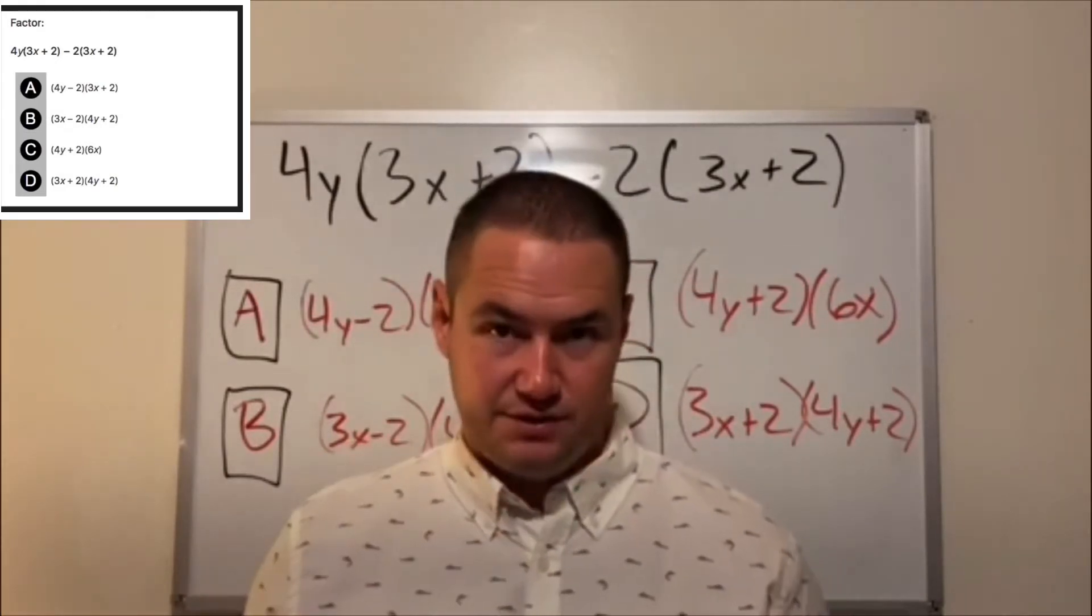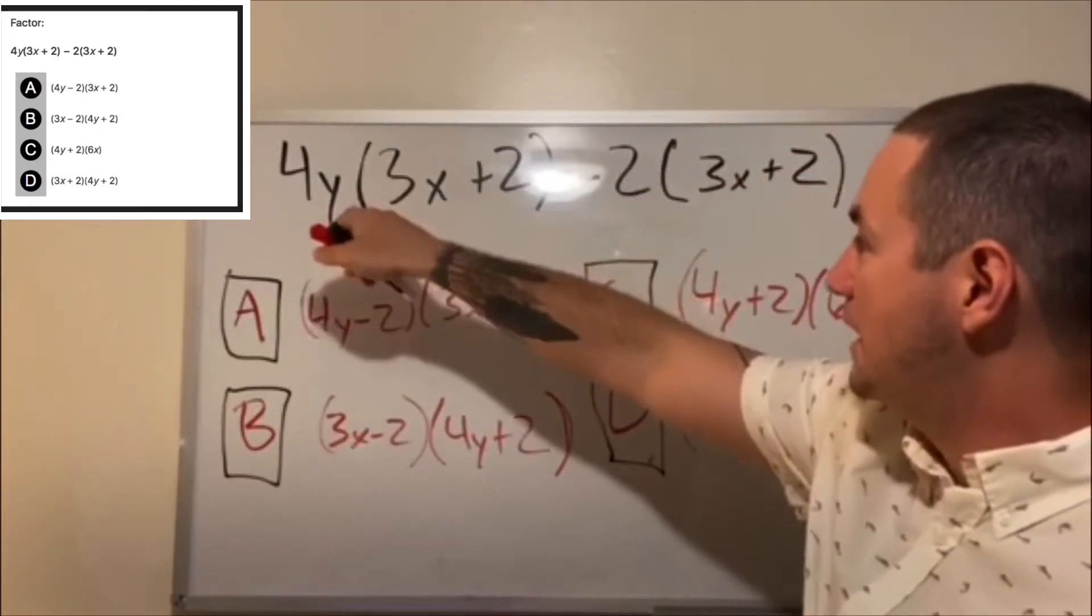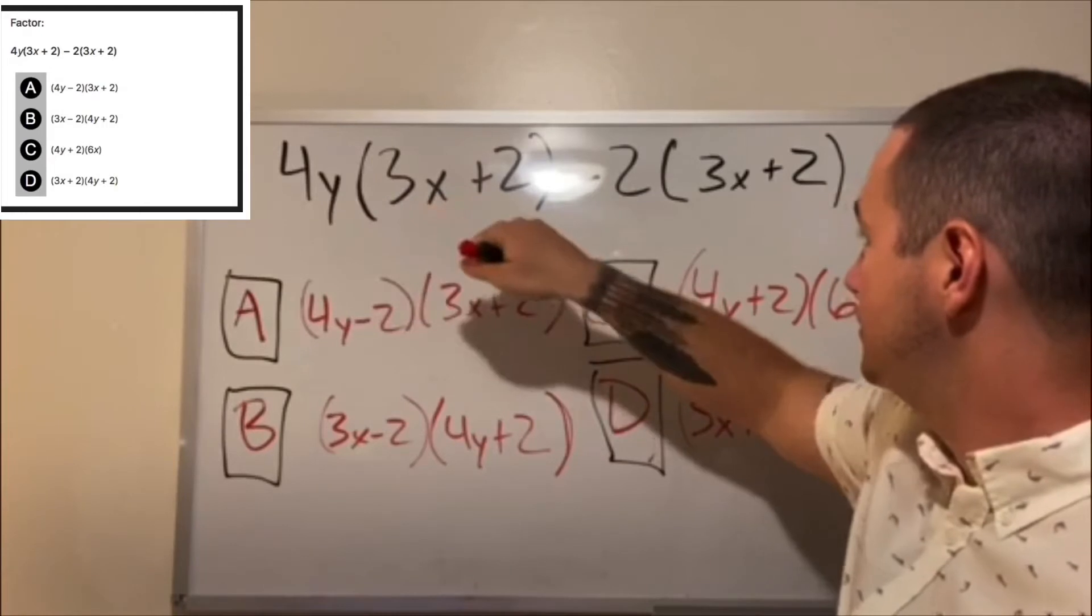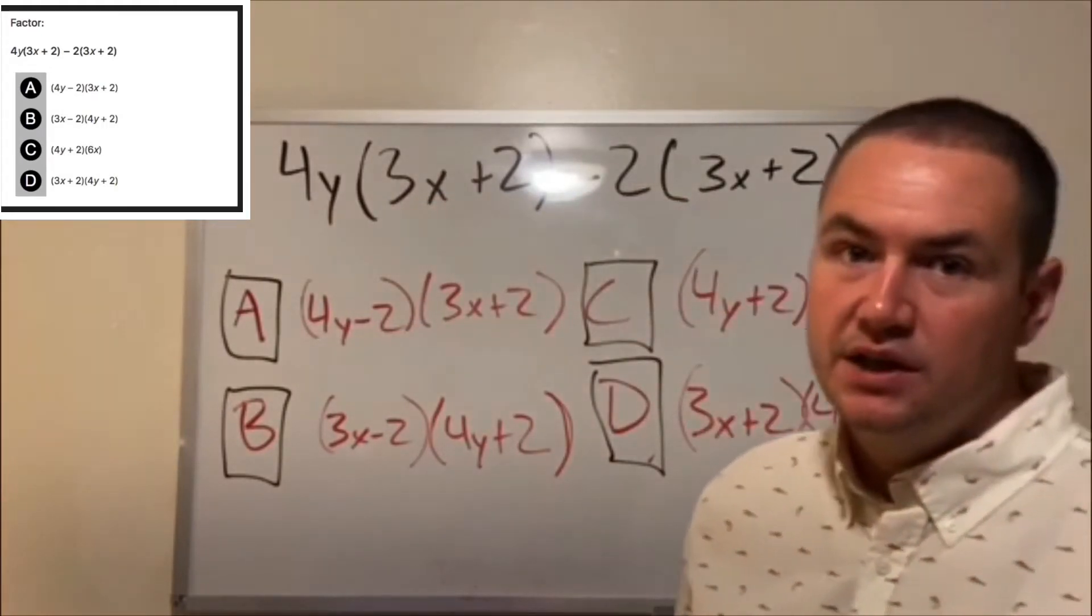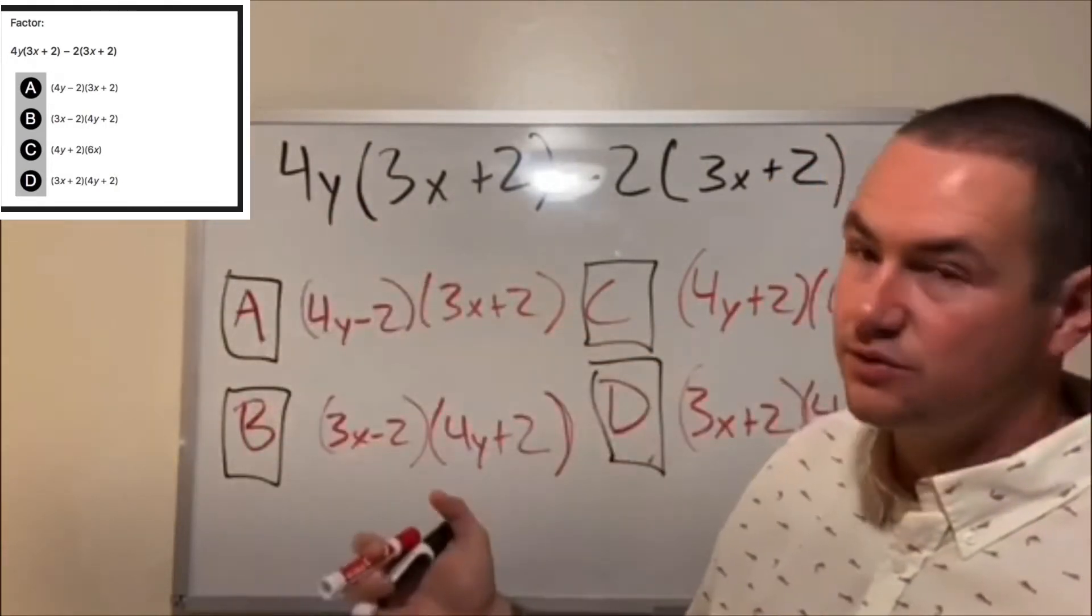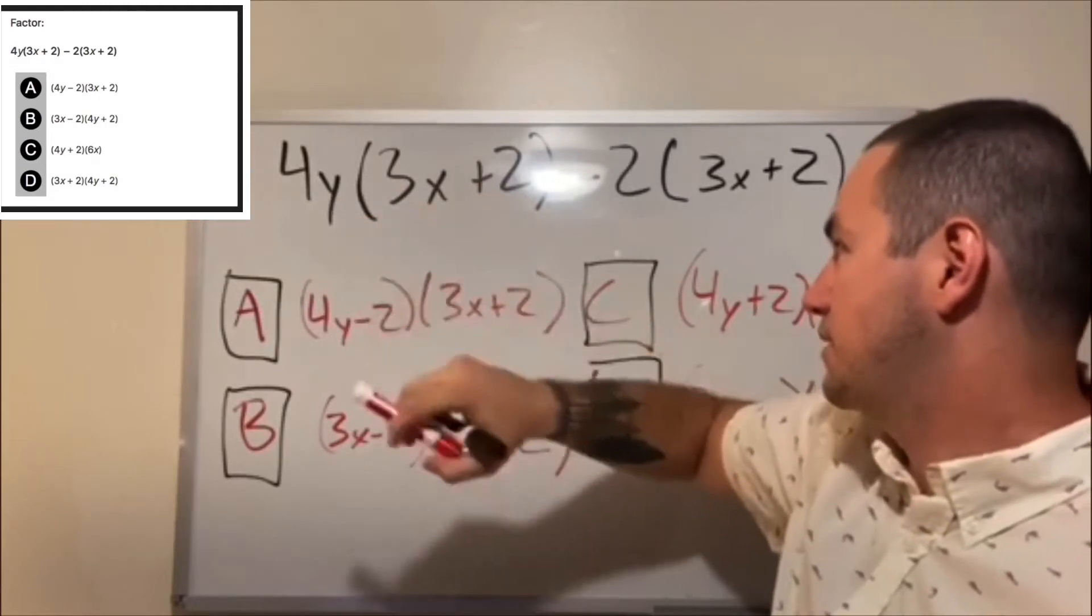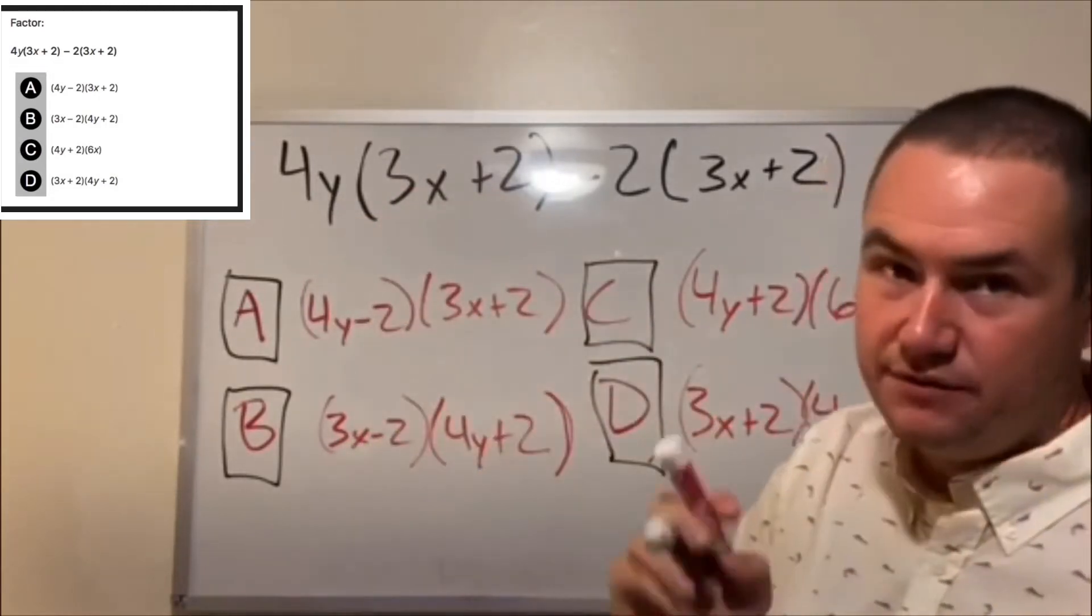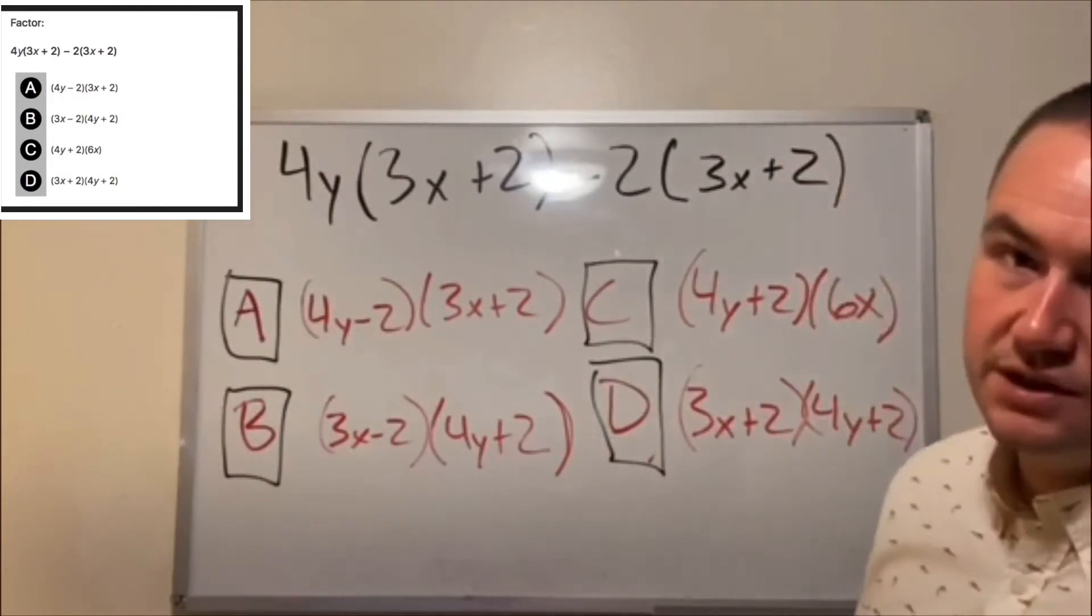So the question is 4y(3x+2) - 2(3x+2). People like to distribute - I was showing my girlfriend this question, the first thing she did is she said 4y times 3x, that becomes 12xy. Well, if you start doing that, you can look at the answers and be like whoa, none of those are going to work. There is no 12xy.